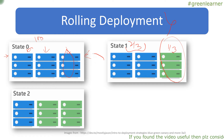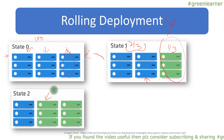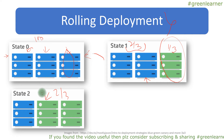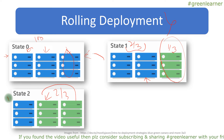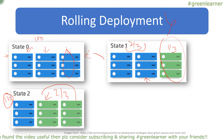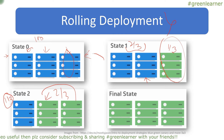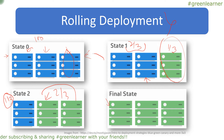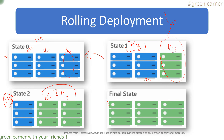If everything goes fine, we replace the second set of servers with the new version, so now two thirds of the application is serving the new version and one third is still on the old server. In the final stage, we replace the remaining servers with the new application, so all older instances are phased out. The new application is in production with zero downtime, customer feedback was gathered quickly, and time to market is reduced.